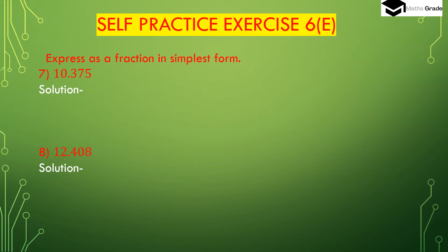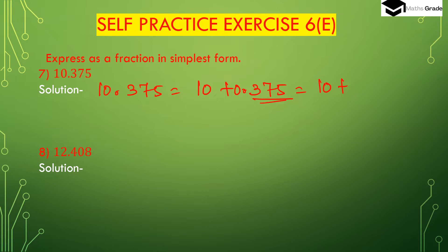Question number 7: express as a fraction in simplest form — 10.375. We can write 10.375 as 10 plus 0.375. After the decimal place there are three digits, so we have to divide 375 by 1000. 1000 has 3 zeros because there are three digits after the decimal place, so we place 3 zeros in the denominator — 1000.